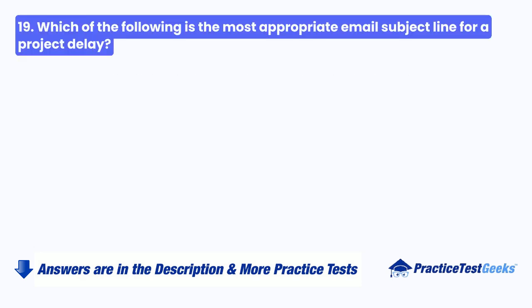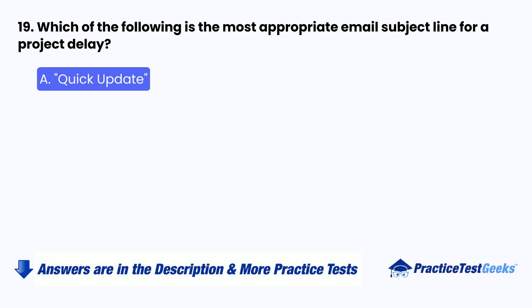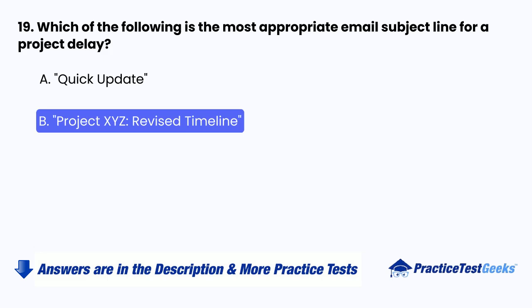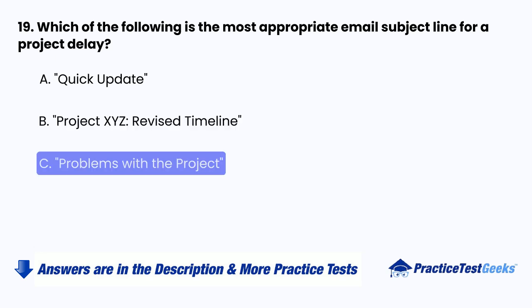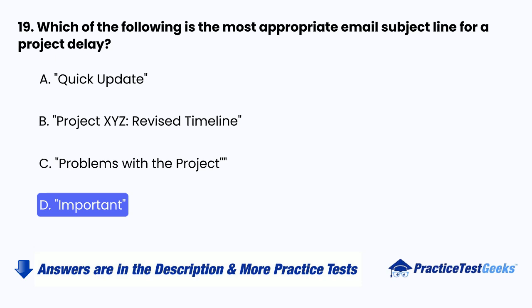Question 19: Which of the following is the most appropriate email subject line for a project delay? A. Quick update. B. Project XYZ, revised timeline. C. Problems with the project. D. Important.